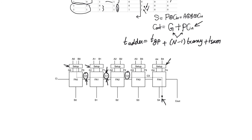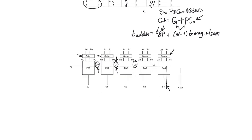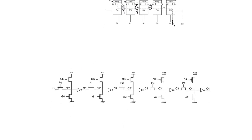Restating A and B in terms of G and P does nothing special — it just adds a small initial setup time, which is immaterial. The architecture of the adder is still the same ripple carry adder. However, looking at it internally, we have done a little bit to help things.